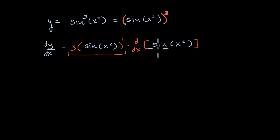But the second part, we need to now take the derivative of sine of x squared. Well now, we would want to use the chain rule again. So I'm going to take the derivative, it's sine of something. So the derivative of sine of something with respect to that something is cosine of that something times the derivative with respect to x of the something.